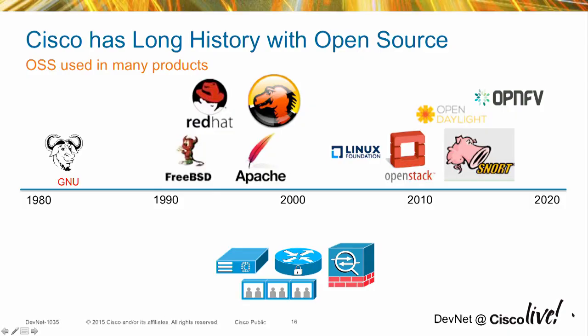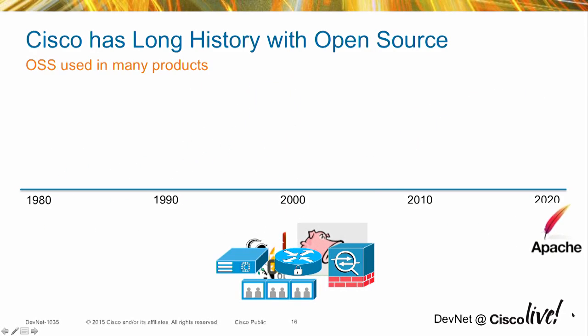Now I'm going to shift gears and talk about open source at Cisco. From the time Cisco started as a company back in the '80s until now, Cisco has been heavily using and contributing to open source across many different projects. I would even go so far as to say that every single product Cisco has today has at least some open source in it. Some of them are even all open source, or at least almost all open source.